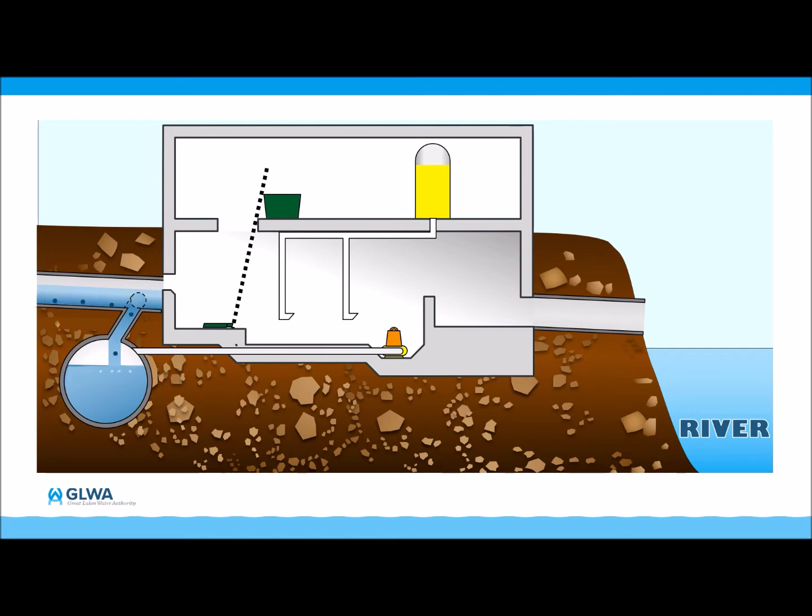During dry weather, the sewer system has more than enough capacity to contain all of the wastewater from the 79 communities served. Wastewater flows through a sewer to one of three interceptors, huge pipes that intercept wastewater that would otherwise flow into the river, and directs it to the Water Resource Recovery Facility, or WRRF, for treatment.